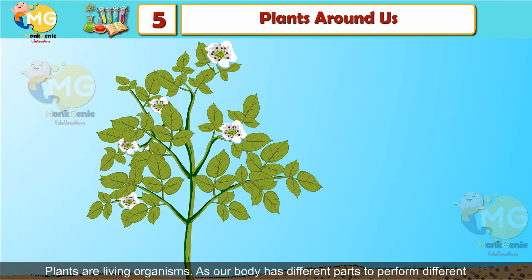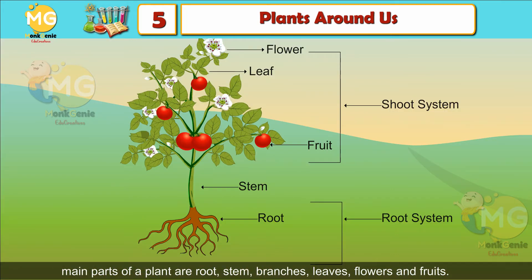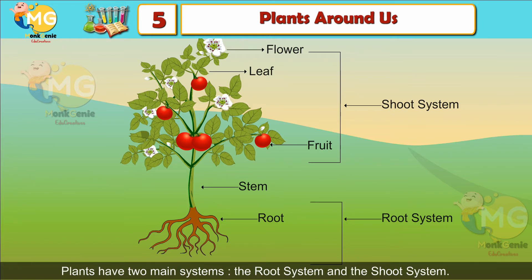Plants are living organisms. Just as our body has different parts to perform different functions, a plant also has different parts to perform different functions. The main parts of a plant are roots, stem, branches, leaves, flowers, and fruits. Plants have two main systems: the root system and the shoot system.